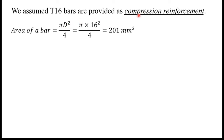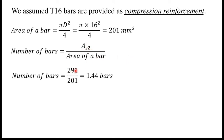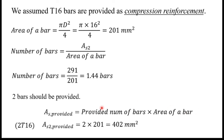Assuming T16 bars are provided as compression reinforcement, the area of one bar = π·d²/4 = π×16²/4 = 201 mm². The number of bars = As2 / area per bar = 291 / 201 = 1.44. Since we can't provide 1.44 bars, we provide 2 bars. Therefore, As2 provided = 2 × 201 = 402 mm². This is the compression steel at the top of the section.